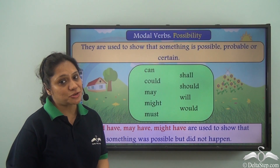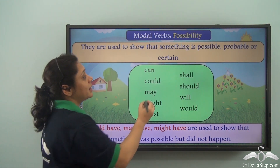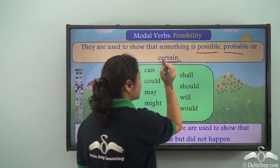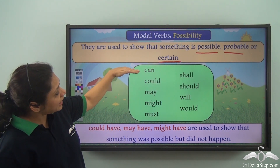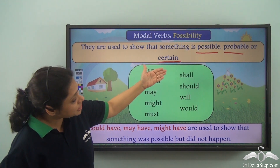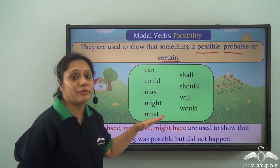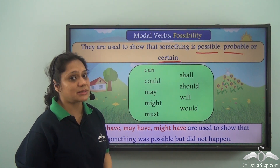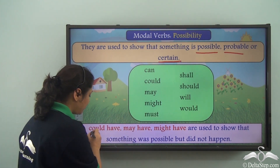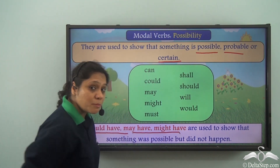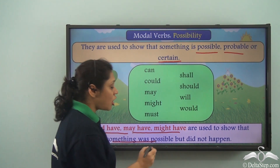We learnt today that modal verbs of possibility are used to show that something is possible, probable or certain. Modal verbs that can be used include: can, could, may, might, must, shall, should, will, and would. It depends on your context as to which modal verb you use to express possibility. We also learnt that 'could have,' 'may have,' and 'might have' are modal verbs used to show that something was possible but did not happen.